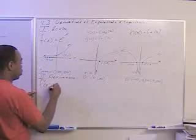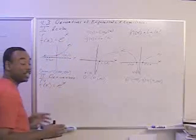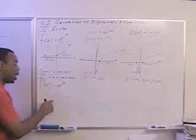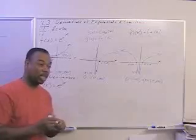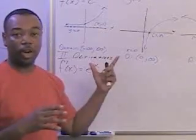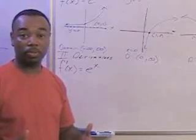the derivative of e to the x will be, again, e to the x. Now, that's very powerful. What this is saying is that the output to the original function also matches the slopes of the function.